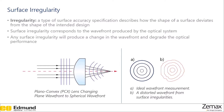Surface irregularities correspond to the wavefront produced by an optical system, so any surface irregularity will produce a change in the wavefront and degrade the optical performance. For example, we have a plano-convex lens which takes a plane wavefront and changes it to a spherical wavefront. If this surface is exactly as designed and we measured the wavefront, we'll get a measurement with perfect circles. If there's surface irregularity in the system, we'll see a distorted wavefront where the wavefronts don't quite match the ideal case.